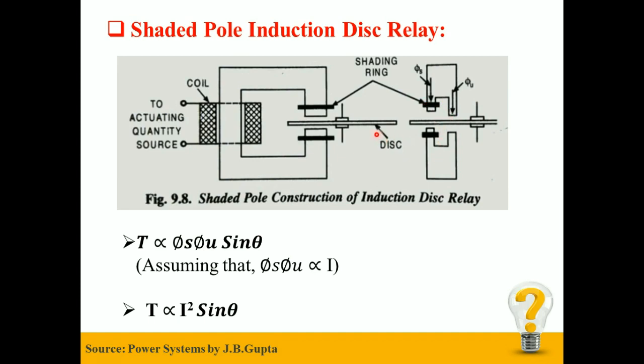A disc is placed between these two poles. The disc is generally made up of aluminum; therefore it has low inertia and needs less deflecting torque for its movement.